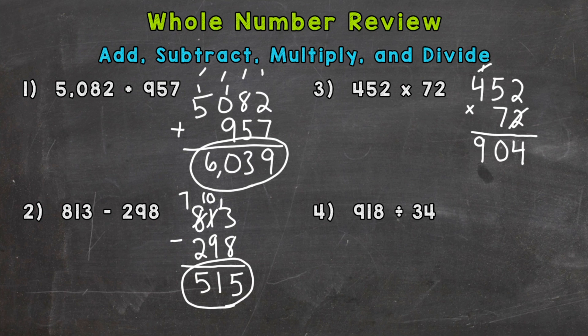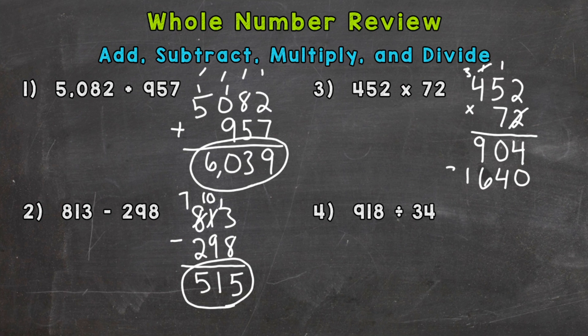Moving on to the tens place — that 7 has a value of 70, so I need a 0 here for my second partial product. Now: 7 times 2 is 14. 7 times 5 is 35, plus that 1 is 36. 7 times 4 is 28, plus that 3 is 31. Now I'm ready to add my partial products.